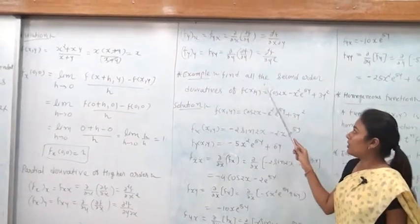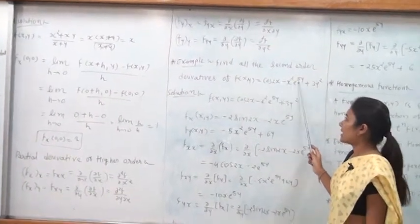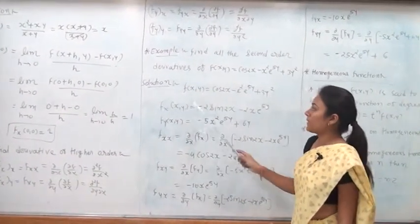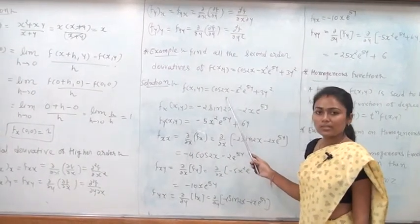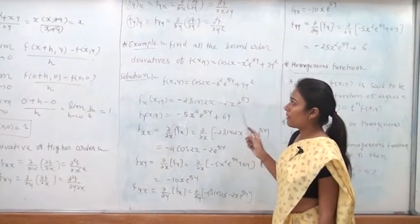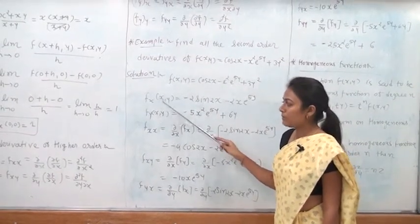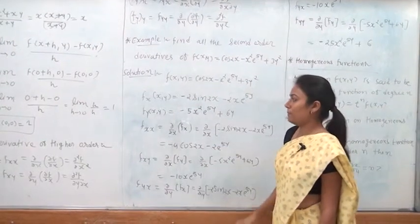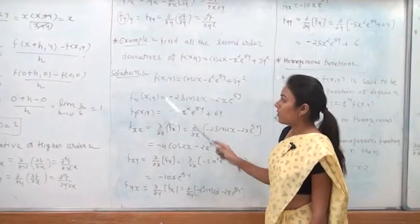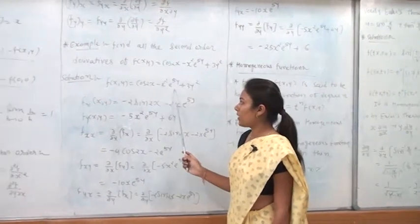Example: Find all second-order derivatives of f(x, y) = cos 2x − x²e^(5y) + 3y². The function is f(x, y) = cos 2x − x²e^(5y) + 3y². First we find f_x and f_y.